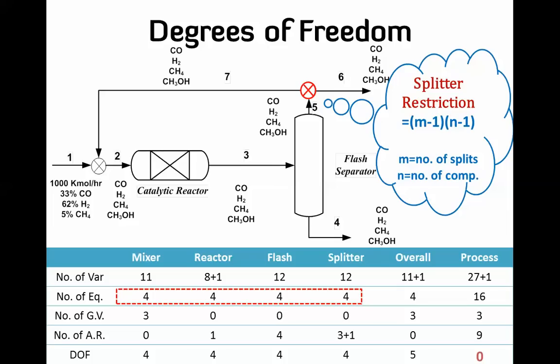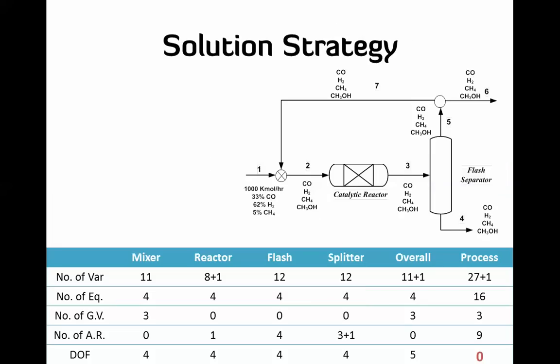This is the case for almost all flowsheets with a recycle stream — which is why the recycle stream makes calculations really complicated. It can't be solved in the straightforward way we used last time. Instead, we use something called the tearing technique, which is an iterative solution: we assume a stream value, perform calculations, and check whether the assumed and calculated values match.